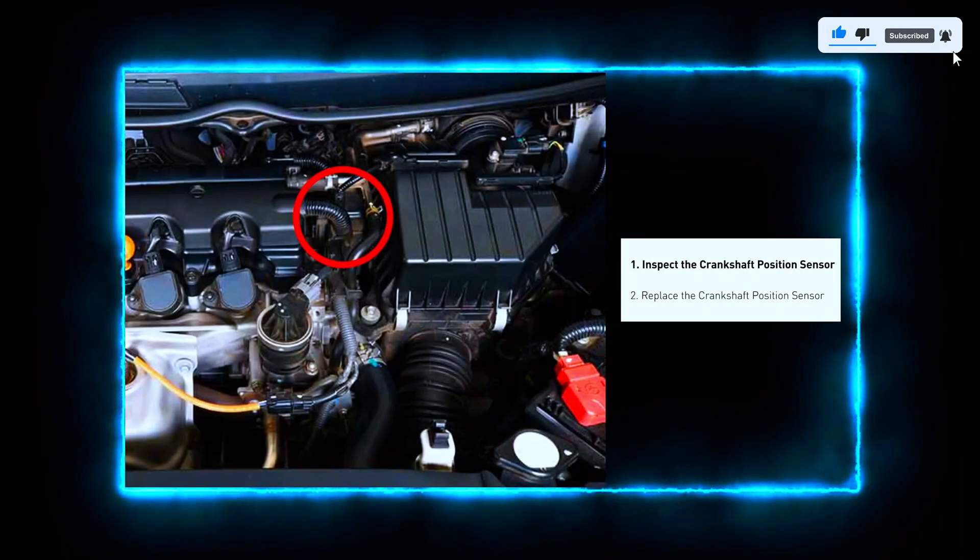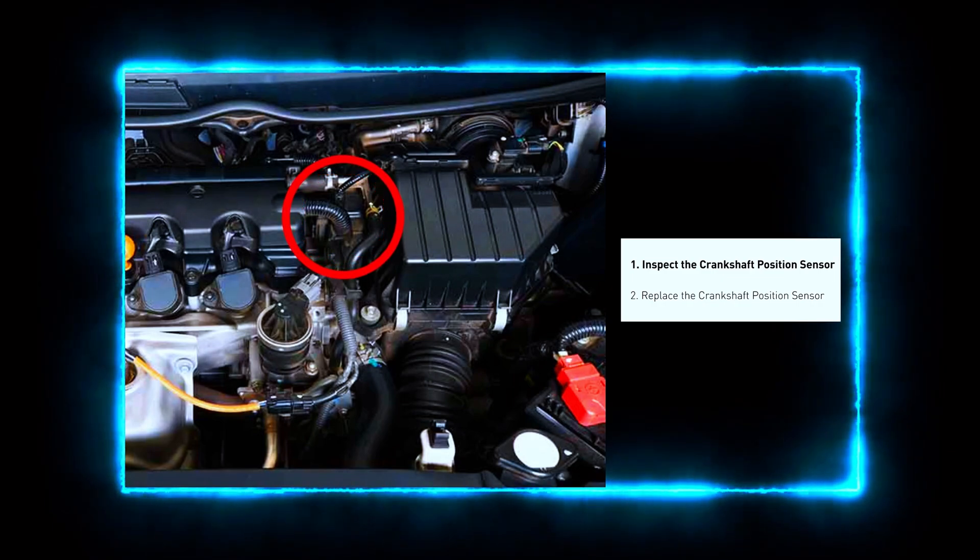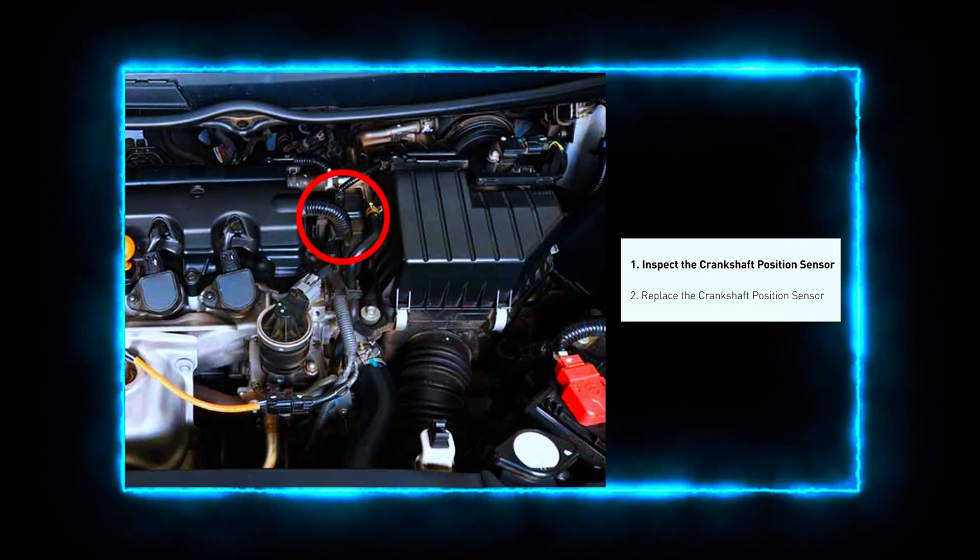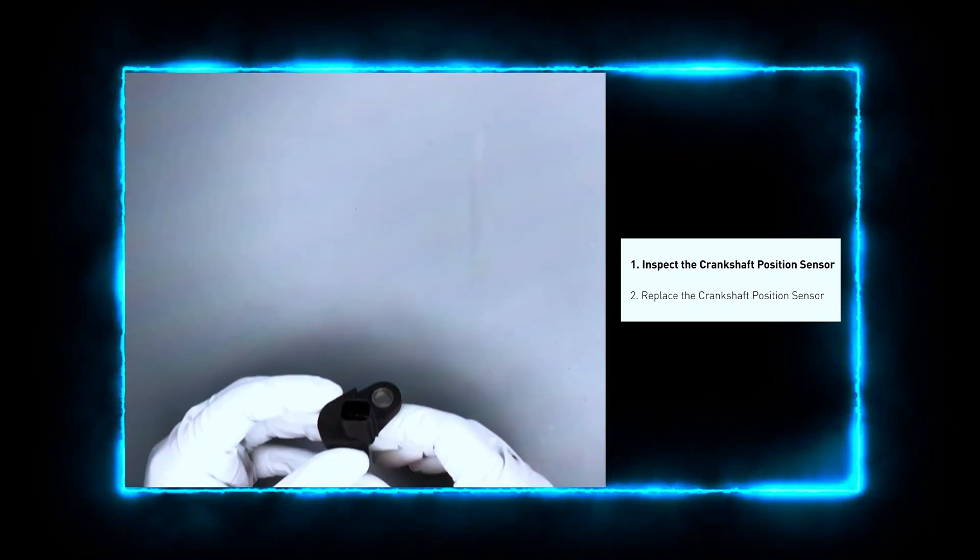First, we need to locate the crankshaft position sensor. It's usually near the bottom of the engine, close to the crankshaft pulley. Check your vehicle's repair manual if you're having trouble locating anything.